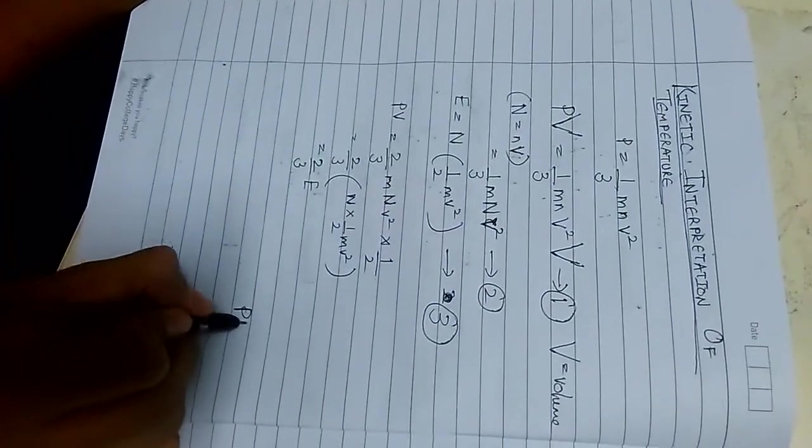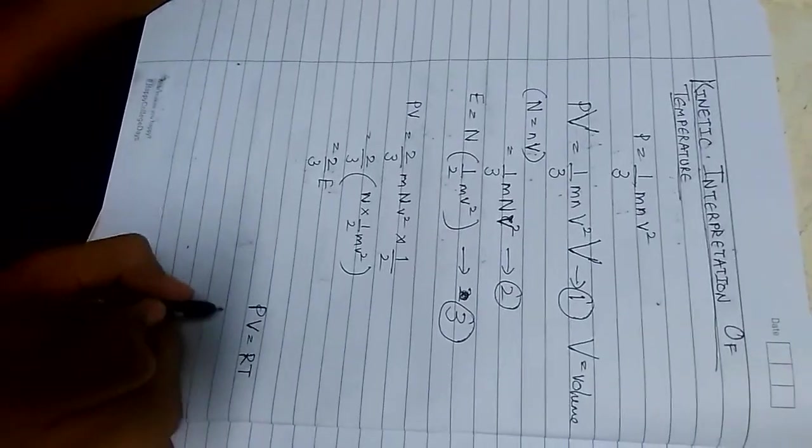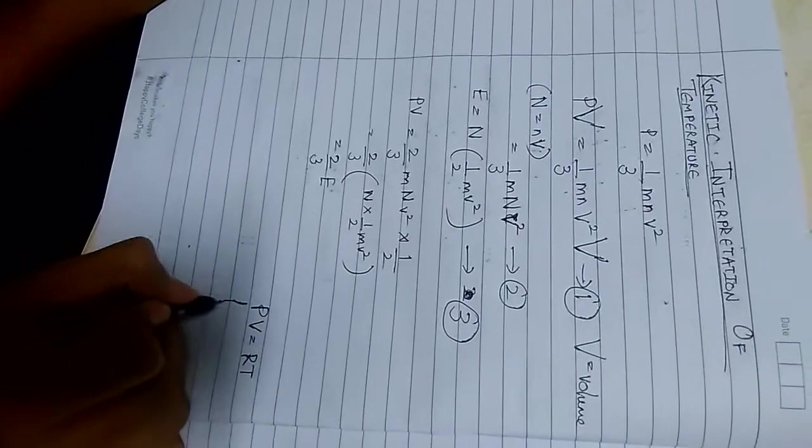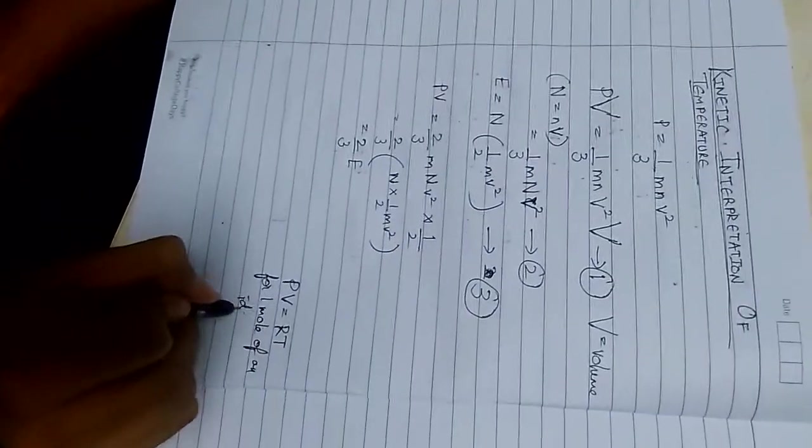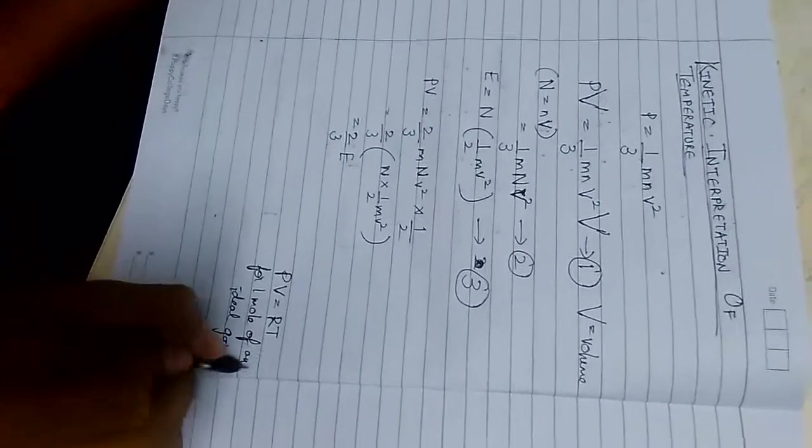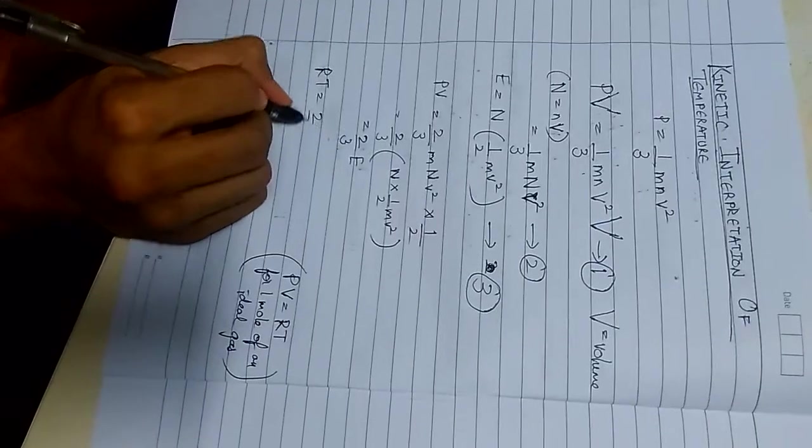Now for an ideal gas we can say pv is equal to r t for one mole of an ideal gas. Therefore r t is equal to 2 by 3 e.